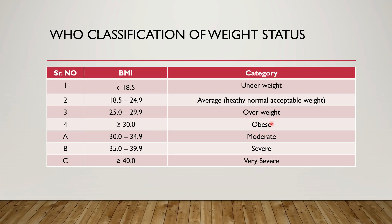This obesity category is further classified: BMI 30 to 34.9 means the person is moderately obese. If the BMI is 35 to 39.9, that person is severely obese, and if the BMI is greater than or equal to 40, then that person is very severely obese.